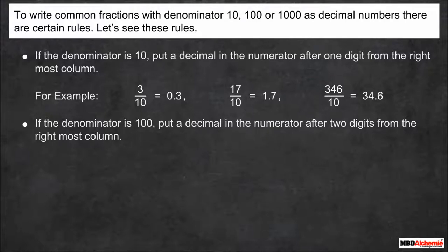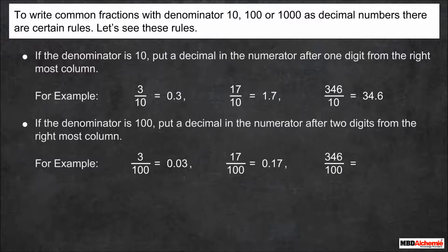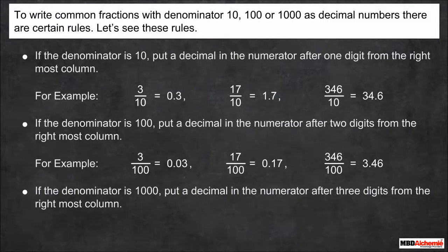If the denominator is 100, put a decimal in the numerator after two digits from the rightmost column. For example, 3/100 = 0.03, 17/100 = 0.17, and 346/100 = 3.46.